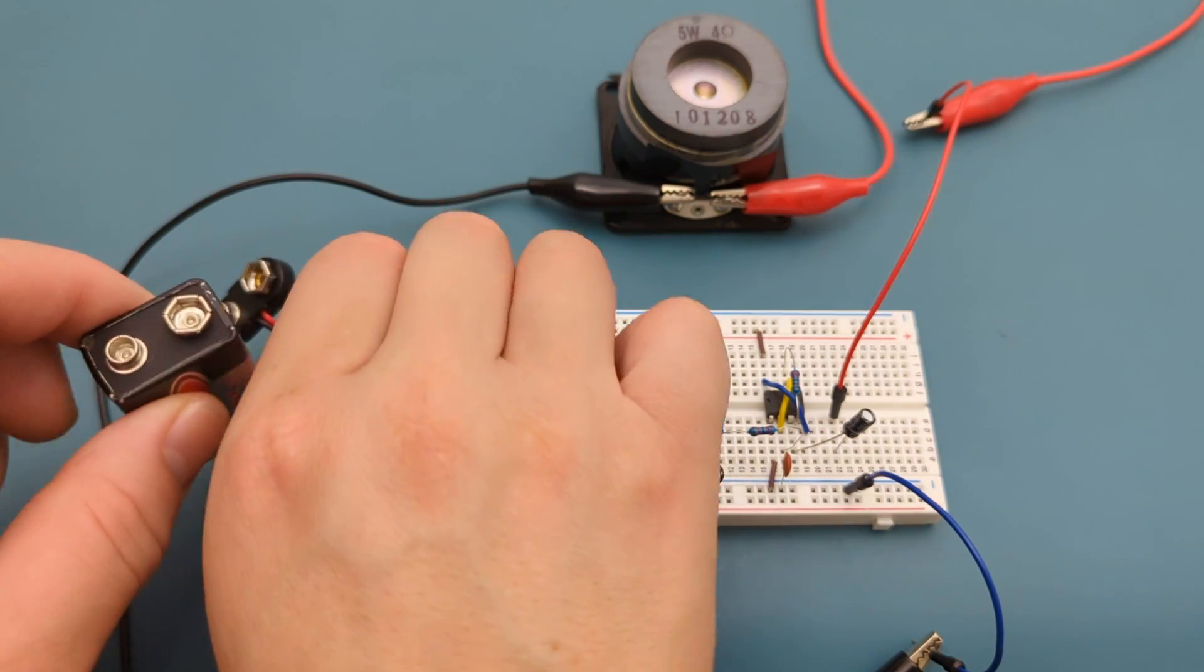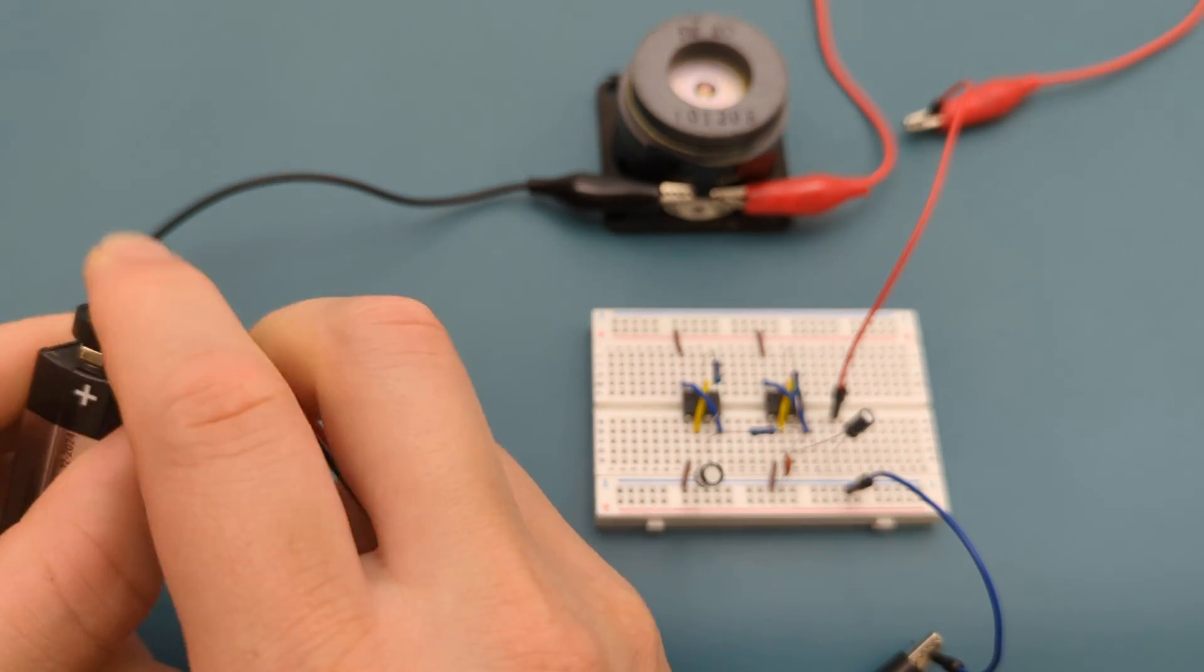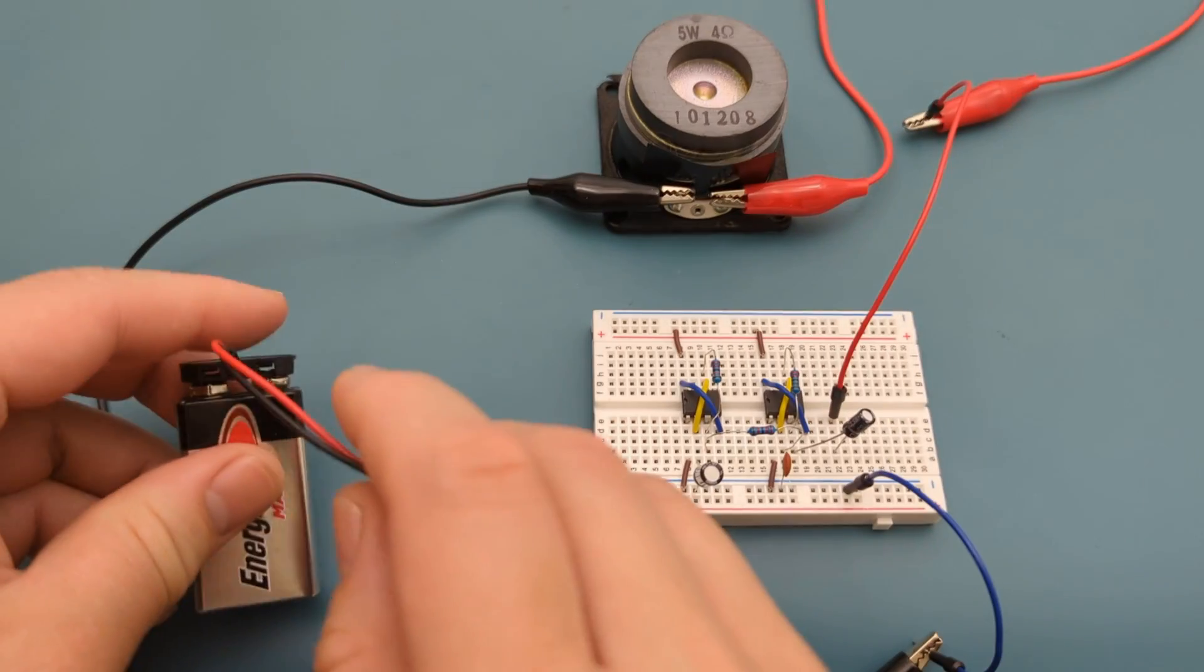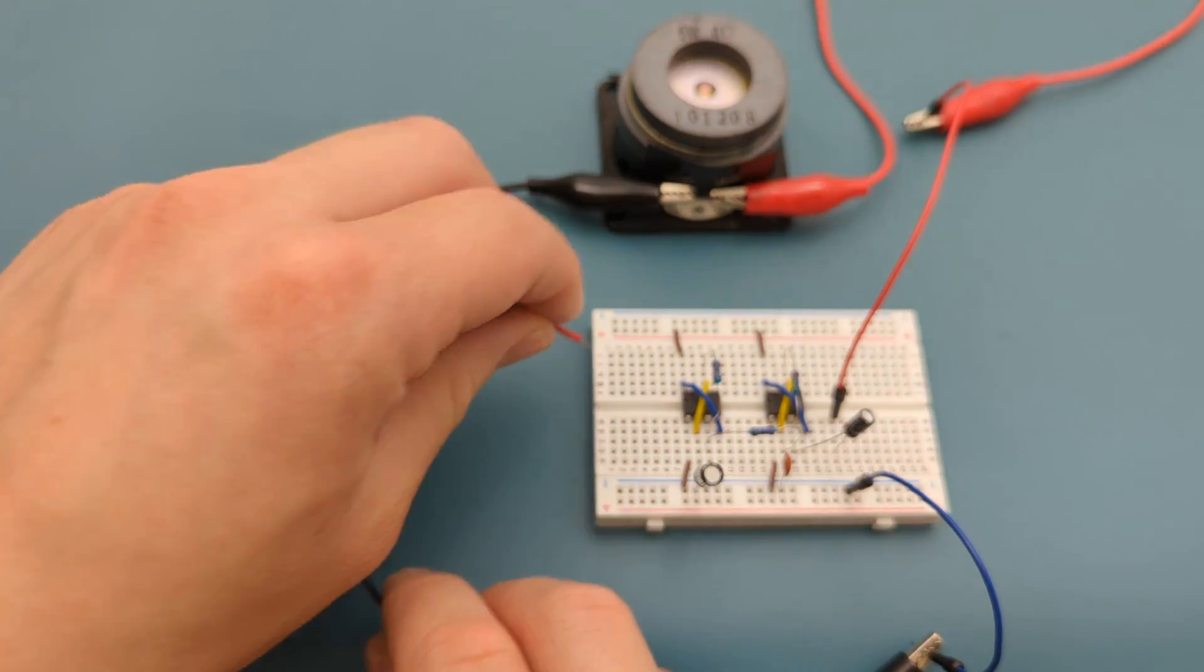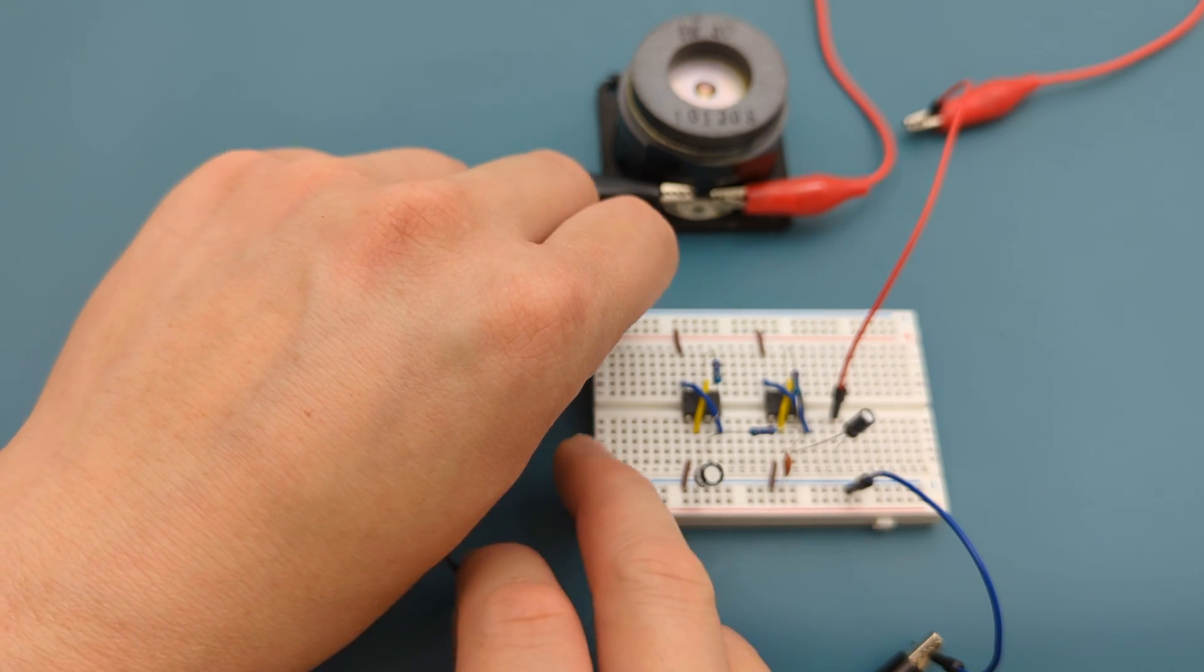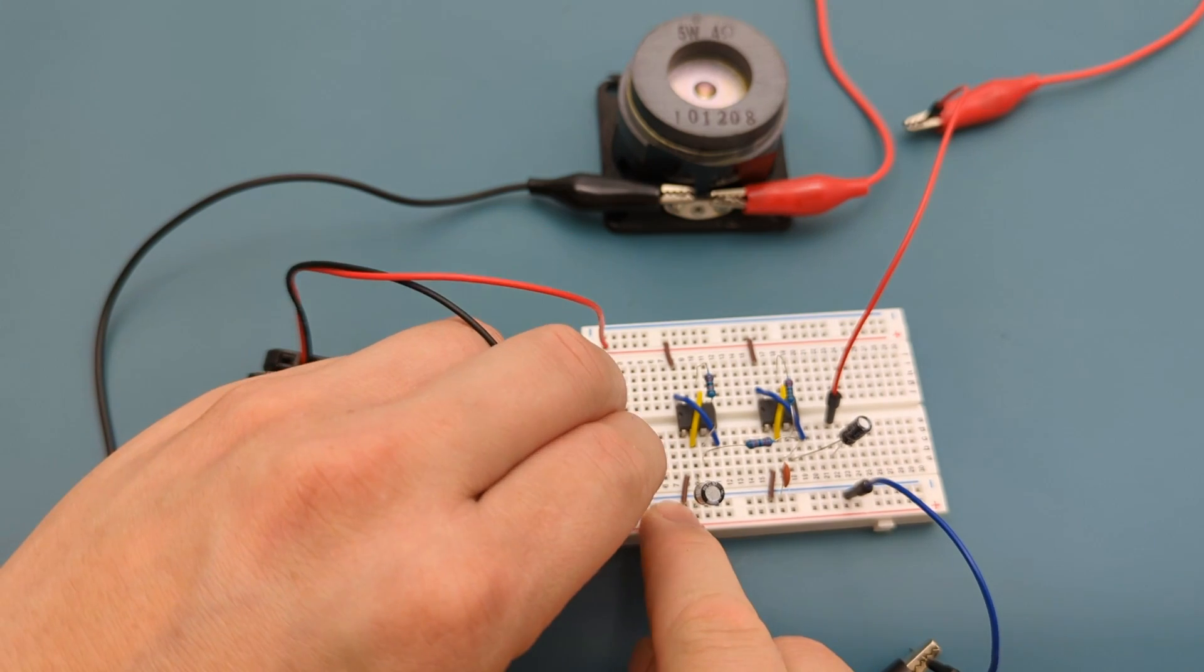Attach the buckle connector to the 9 volt battery. It's time to connect the power supply. Connect the positive lead of the battery holder to the positive rail. Connect the negative lead of the battery holder to the negative rail.